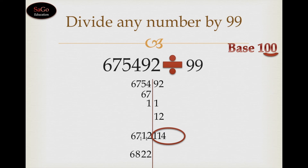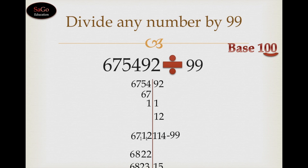Since the remainder 114 is bigger than the divisor, we subtract 99 from 114 and get 15. This is our actual remainder, and we add 1 to the quotient, which becomes 6823. So 6823 is the quotient and 15 is the remainder.